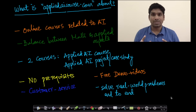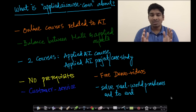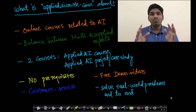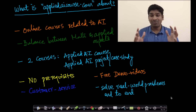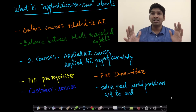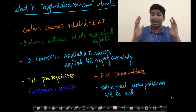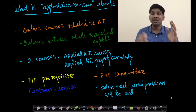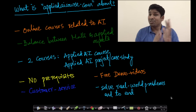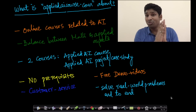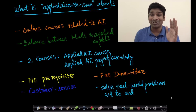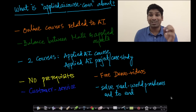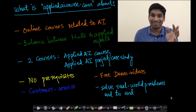Today we have two courses at AppliedAICourse.com. The first is the Applied AI Course, typically targeted towards students and working professionals who want to make a lateral career move into AI roles. It has about 140-plus hours of content explaining all the important and critical concepts in AI, assuming you know nothing — no math from undergraduate, graduate school, or even 11th and 12th grade.